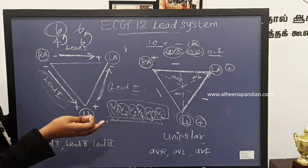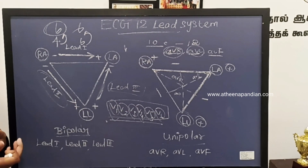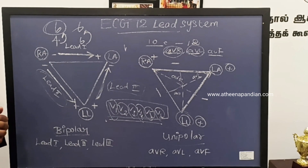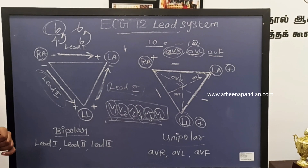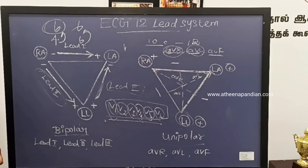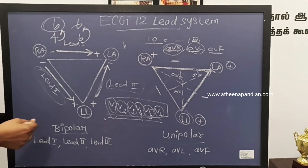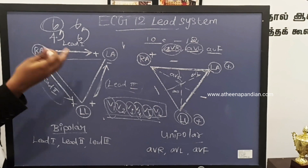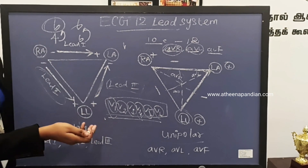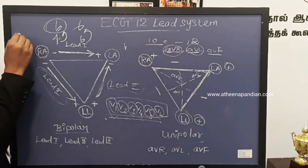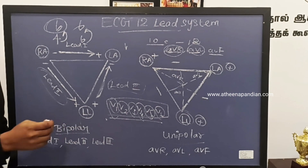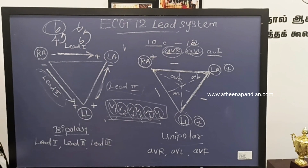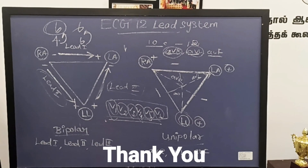By using this 12-lead system, we can view the heart from different angles and directions and obtain the electrical activity of the heart's function. Depolarization towards a lead produces a positive deflection, and depolarization away from the lead produces a negative deflection of the heart. This is what the ECG 12-lead system is. Thank you.